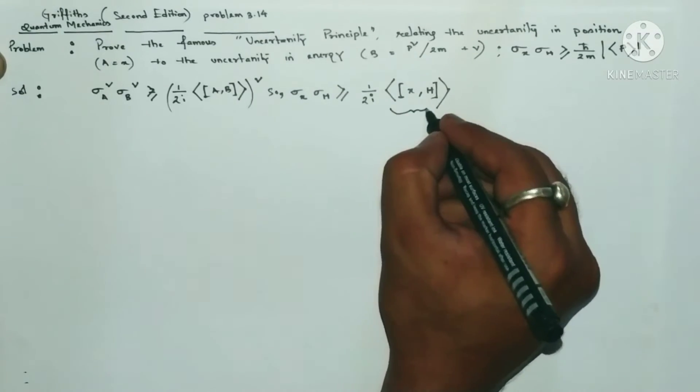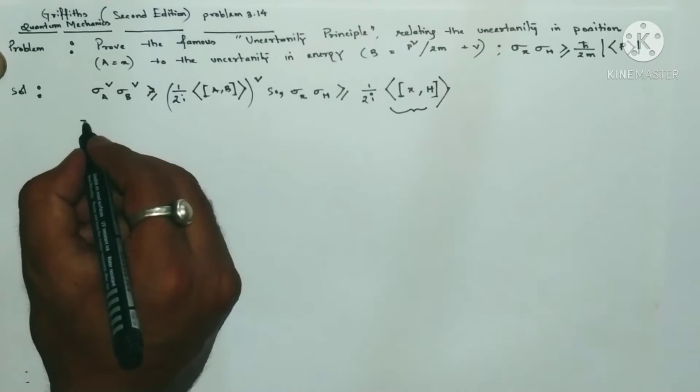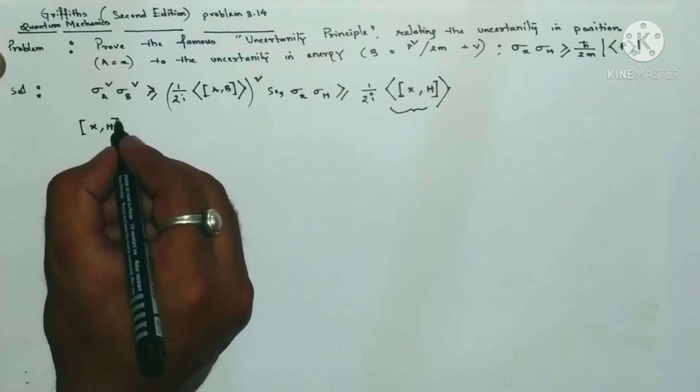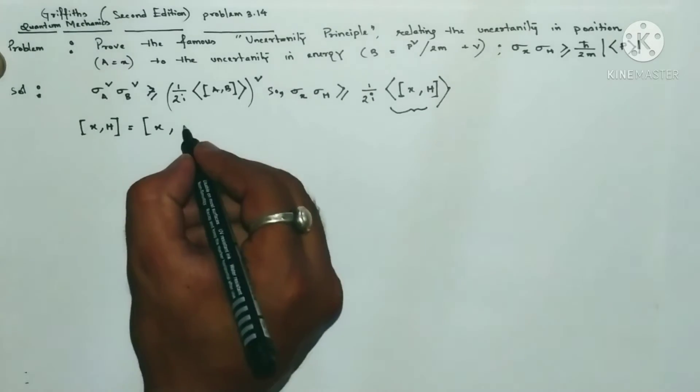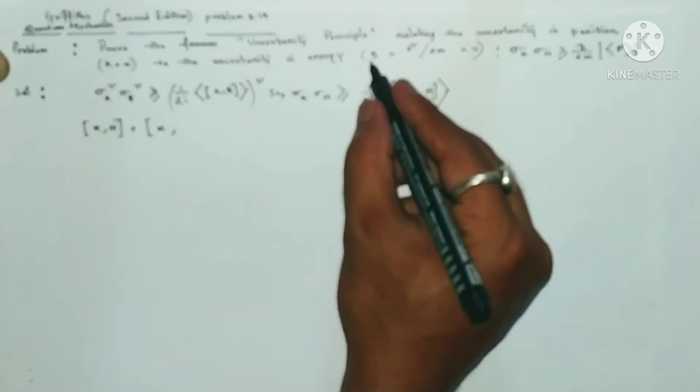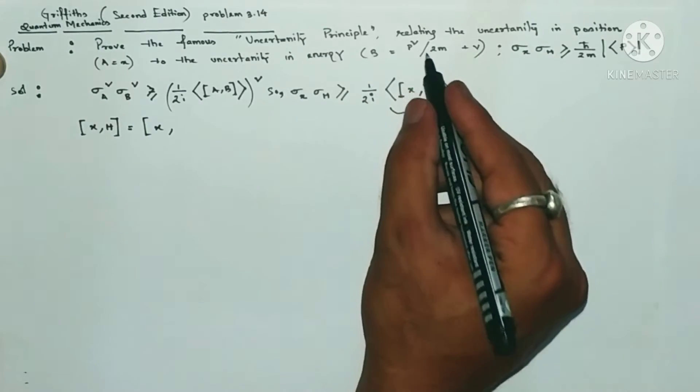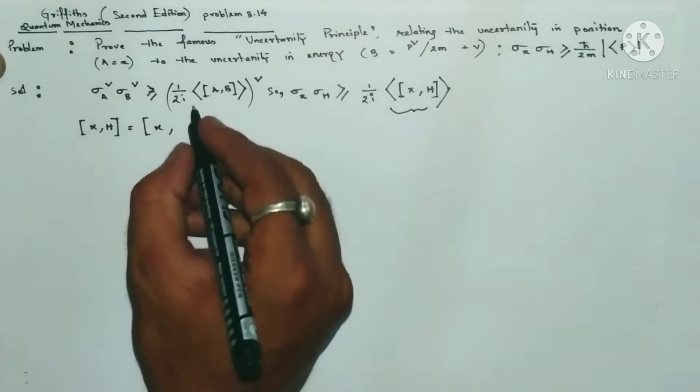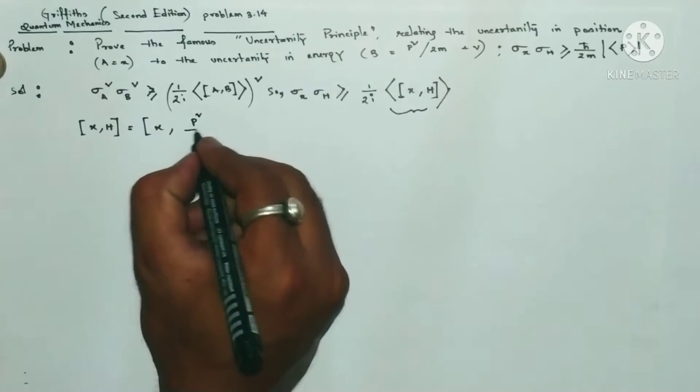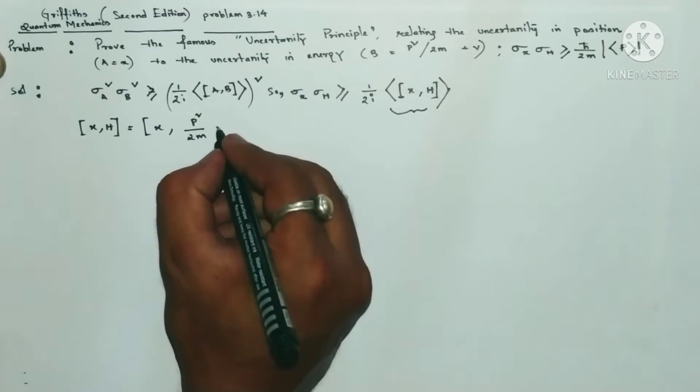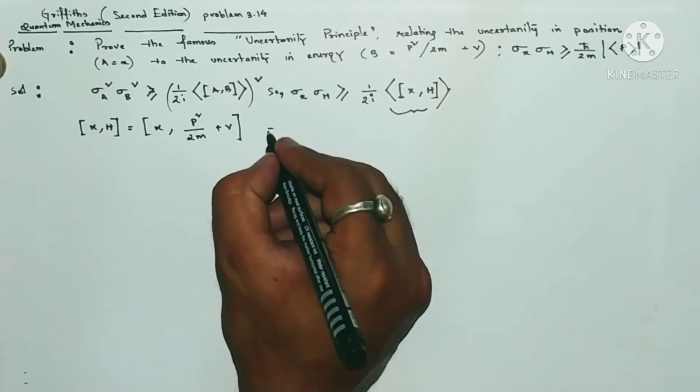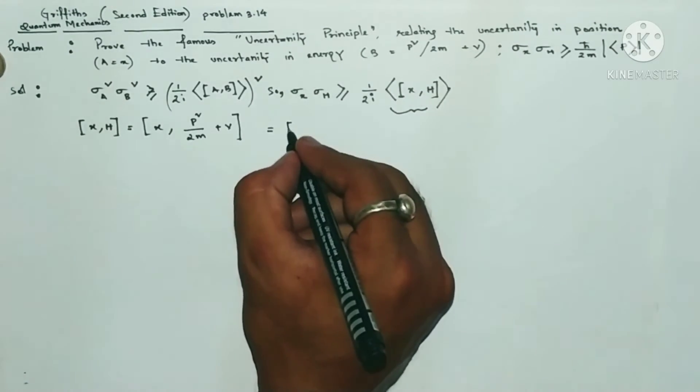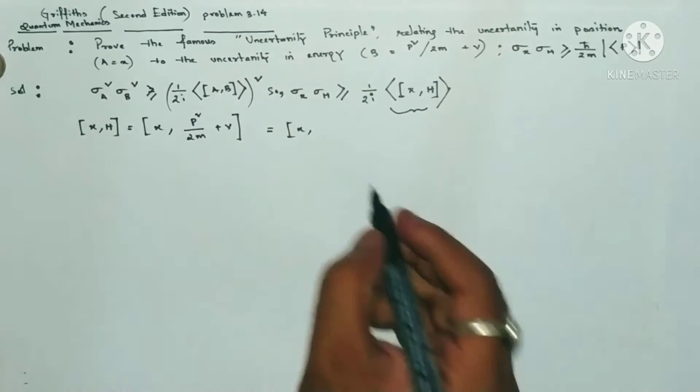Now we will find this commutator X comma H. This can be written as X comma Hamiltonian, where Hamiltonian equals P squared by 2m plus V. So we will break this commutator.